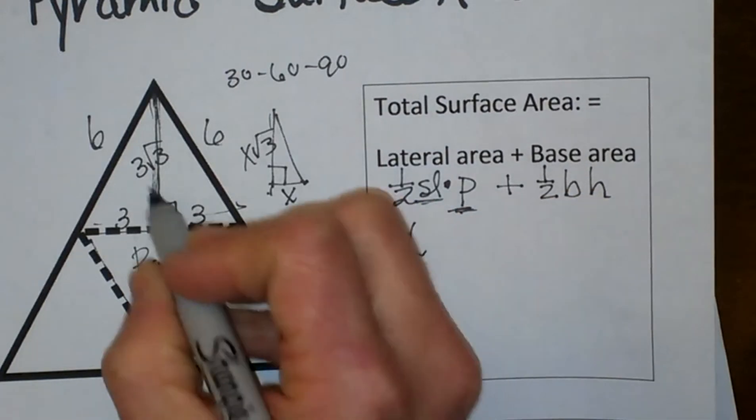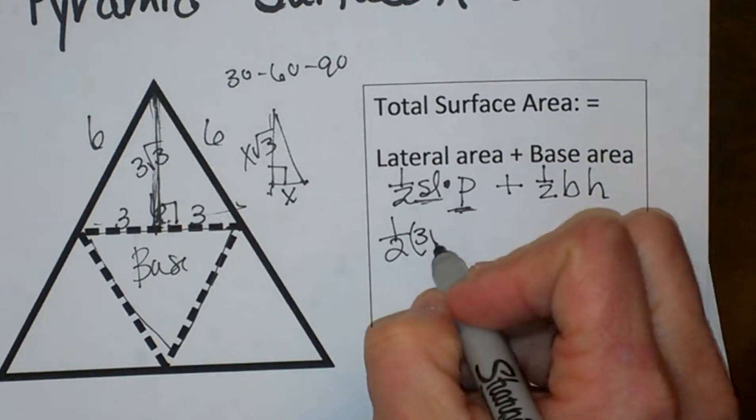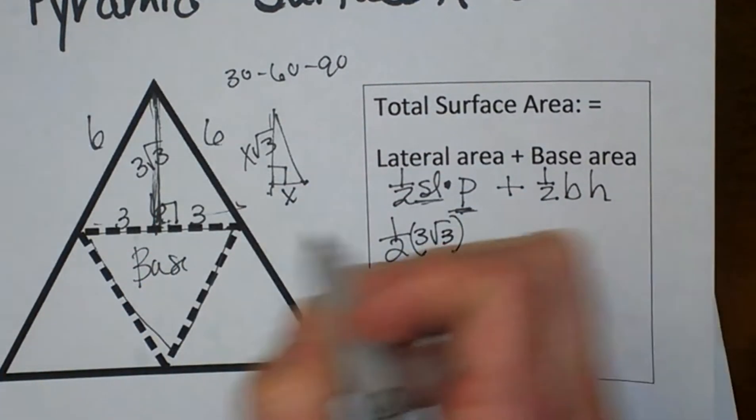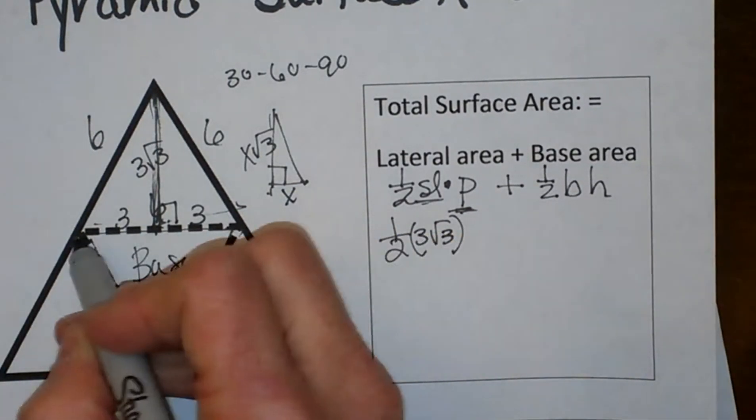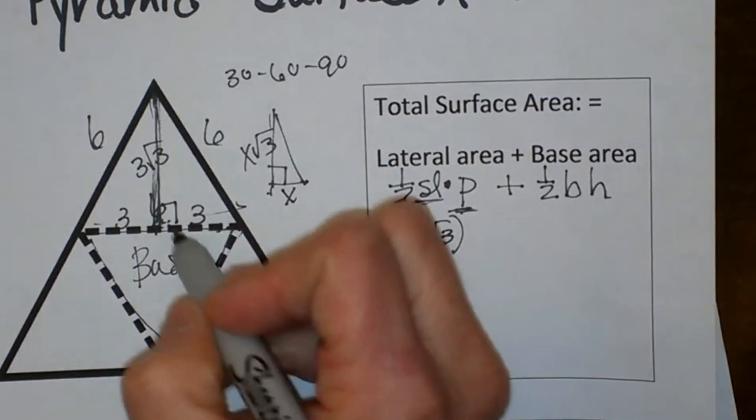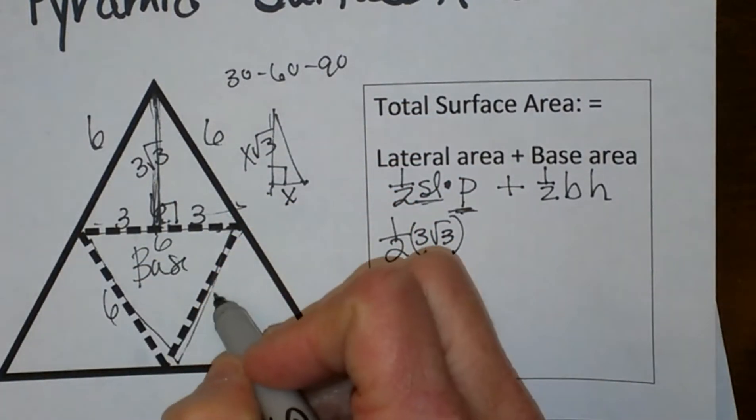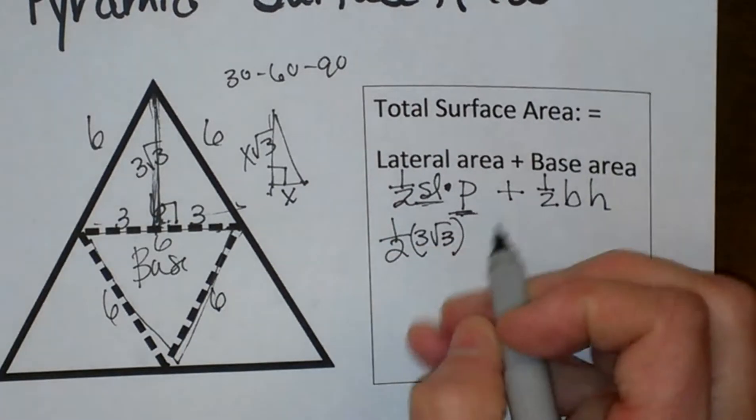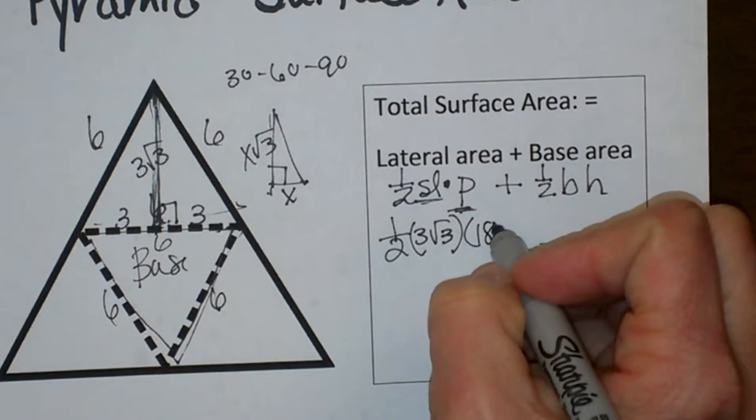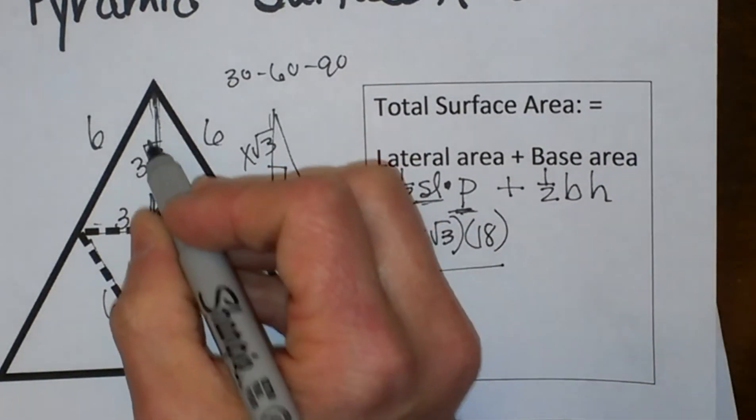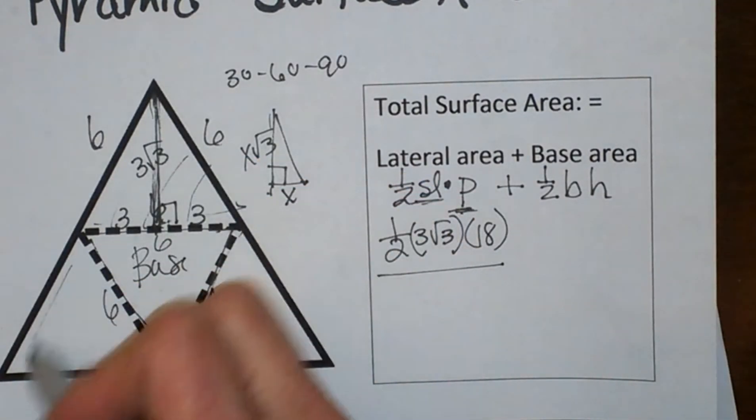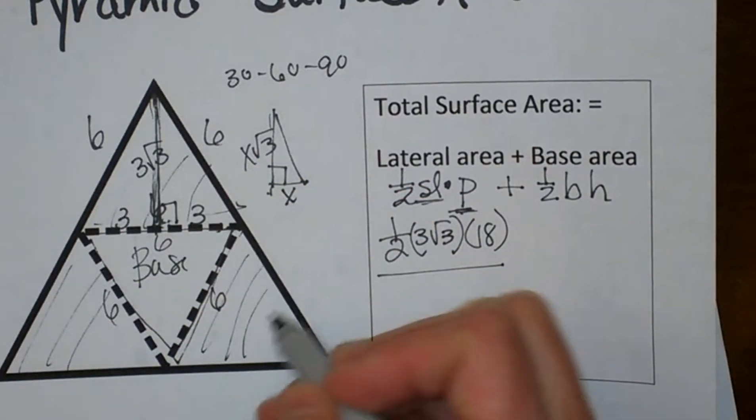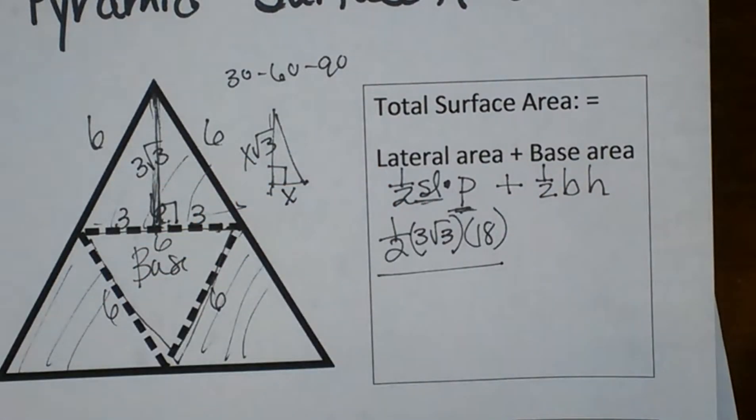I have 1 half, my slant height is 3 root 3, and then the perimeter of the base. I am going to add this base up. Well, we know this side is 6 because we have equilateral triangles, so 6, 6, and 6 is going to give us 18. So there we go. That gives me my lateral area. What lateral area? It is the sum of these three faces that are the triangular faces in this pyramid.